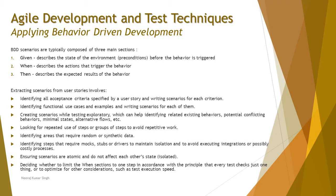Some of the factors involved in extracting scenarios from user stories include: identifying all acceptance criteria specified by the user story and writing a scenario for each criterion, so that each criteria is addressed independently. Identifying functional use cases and examples and writing scenarios for each of them — many use cases and examples are conditional, so it's crucial to identify each condition. Creating scenarios while testing exploratorily, which can help identify related existing behaviors, potential conflicting behaviors, minimal states, alternative flows, and more. Also, looking for repeated use of steps or groups of steps to avoid repeated work.